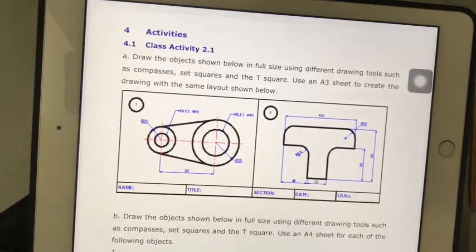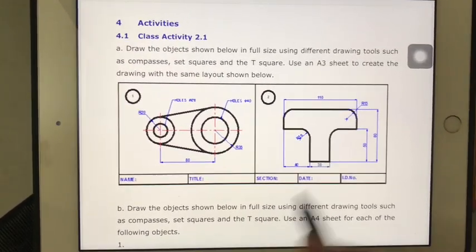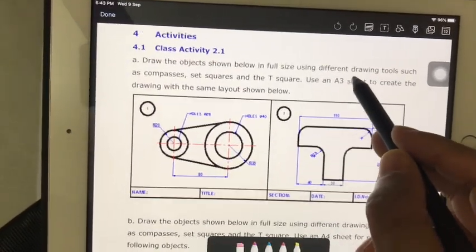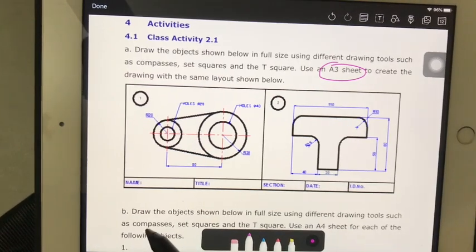Having drawn the first two activities, now let us go into the next activity. In this activity they say that you have to draw it in A3 paper, so you have to draw it in A3, right?